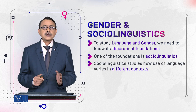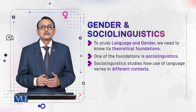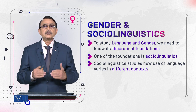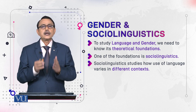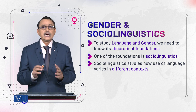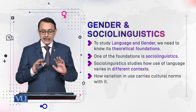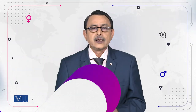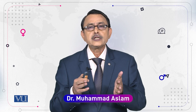Sociolinguistics studies how the use of language varies in different contexts. Mainly it is the study of language variation — how our use of language changes according to use and user. How variation in use carries cultural norms with it. When we use language, we use it according to certain norms, so along with use we are also learning the norms of use.